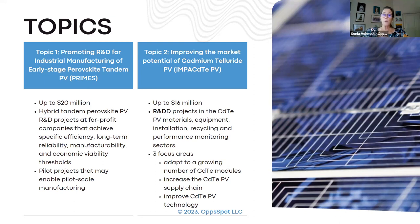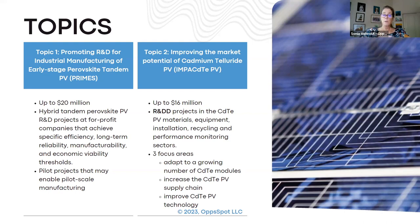Topic two, called IMPACT, is about improving the market potential of cadmium telluride PV — that one is up to $16 million. It covers both research and development and demonstration projects, focusing on materials, equipment, installation, recycling, and improving performance monitoring. There are three focus areas: how to adapt the growing number of cadmium telluride modules, how to increase the cadmium telluride PV supply chain, and how to improve the technology.